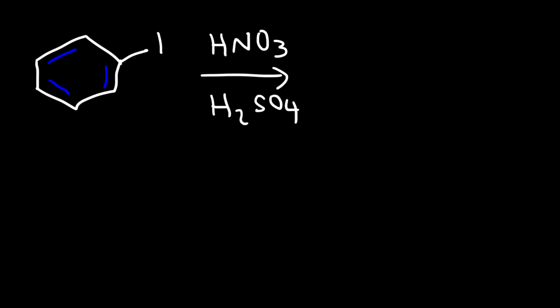In this reaction we're going to replace a hydrogen atom with an electrophile, in this case NO2. Because we replace a hydrogen with an electrophile, this is called an electrophilic aromatic substitution reaction. The product of this reaction is called nitrobenzene.